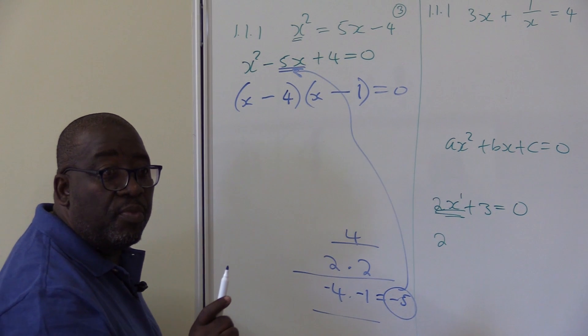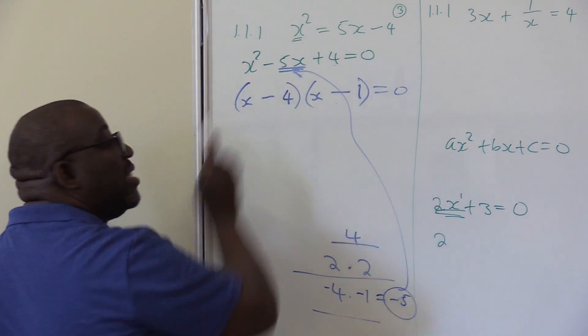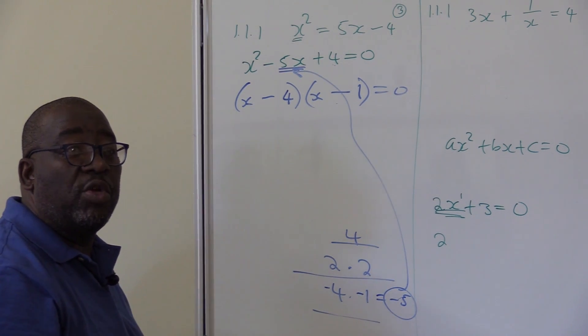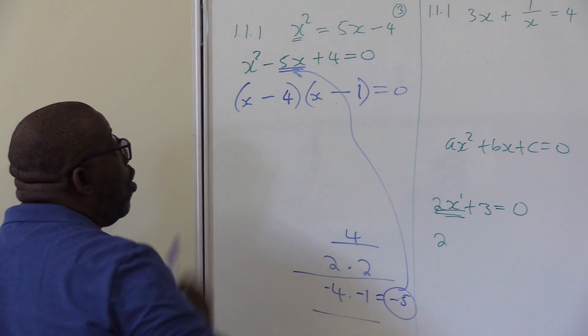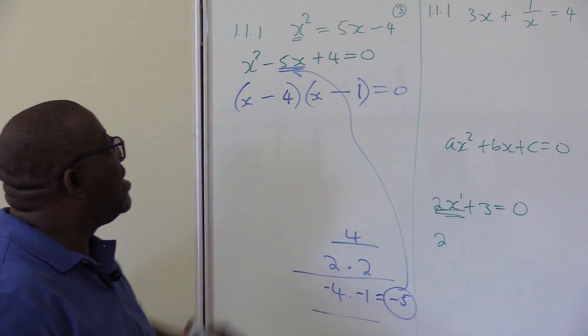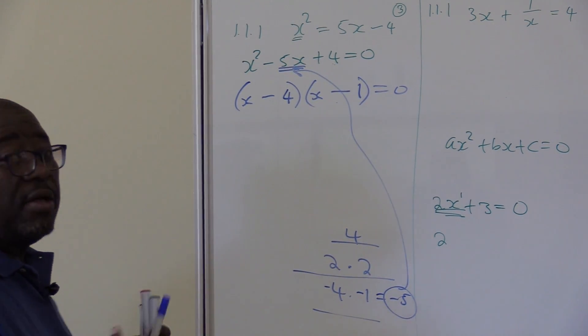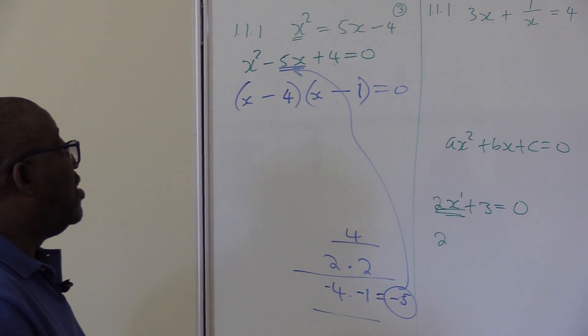In this particular case, the factors of 4 that can give us 5 is 4 and 1, and both 4 and 1 must be negative for us to get minus 5. We use trial and error method to find these factors. Remember, when I multiply them, negative 4 times negative 1 does give us positive 4. Half the battle is won.